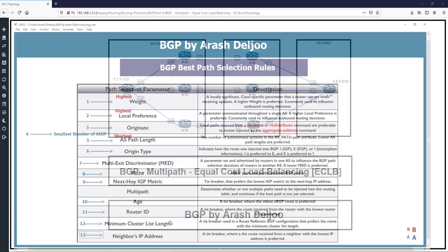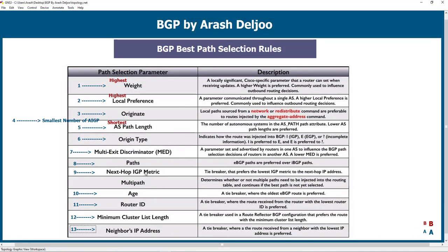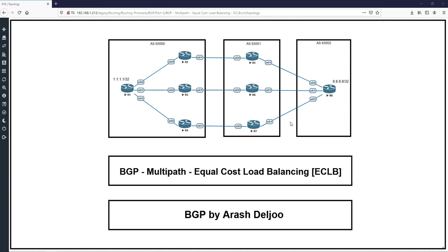In BGP we don't use metrics the same way. Multi-path can be important and enabled only when some routes are equal up to the next-hop IGP metric rule — the lowest IGP metric to next-hop. If some routes are equal exactly up to the next-hop IGP metric rule, then after that if you enable multi-path, it should work. But if two routes have different AS paths, enabling multi-path has no effect.